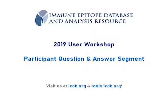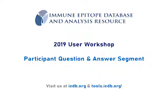Q: For the de-immunization tool, does it always change one amino acid or can it change several? A: It only changes one amino acid at a time, because 20 times 20 becomes computationally large quickly. If you want to look at multiple amino acid substitutions, what we'd recommend is to select the ones you're interested in and run them again — then the tool will generate all two-substitution combinations, which is a little tedious but doable.